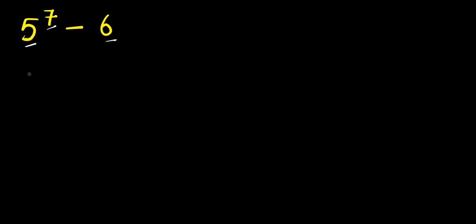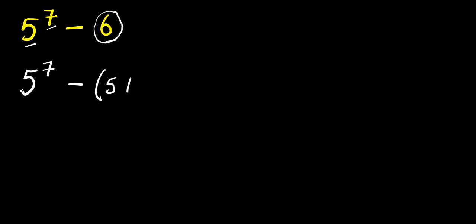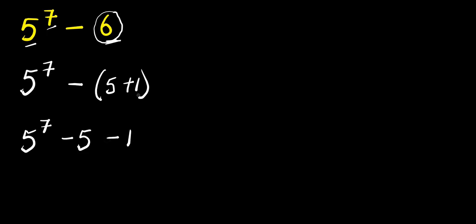We have 5 to the power of 7 minus, and we can replace this 6 as the summation of 5 and 1, so we have 5 plus 1. I put it in brackets because I'm just considering this 6. From here, I have 5 to the power of 7, and I'm going to multiply everything with this minus, giving minus 5 and also minus 1.